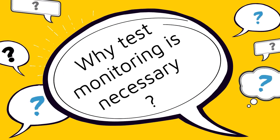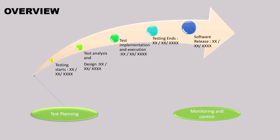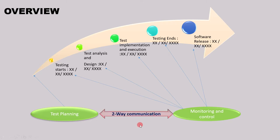Let's first see why test monitoring is necessary. As we know, test planning draws the roadmap for the test activity, which includes scheduling like when testing will start, when it will end, when test analysis will start, and when that will end — similarly for all other test activities. But in reality, it is not possible to provide fixed timing and follow it due to many operational issues. That is the reason it is advised to monitor the current status of each test activity against the planned one, so that if there is any lag, we can take necessary actions to meet the planned schedule. That is why test monitoring is important.